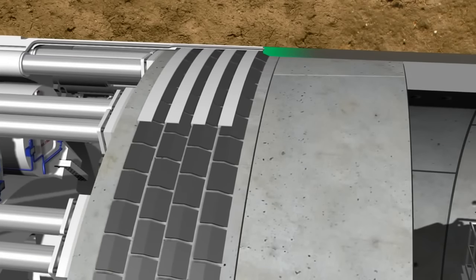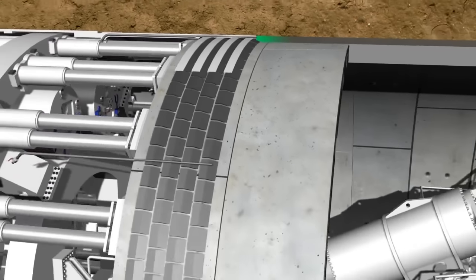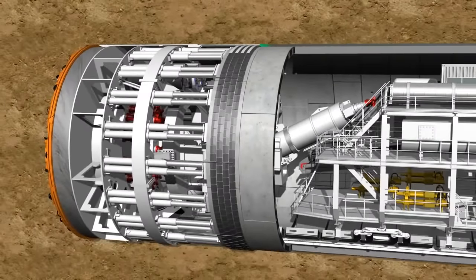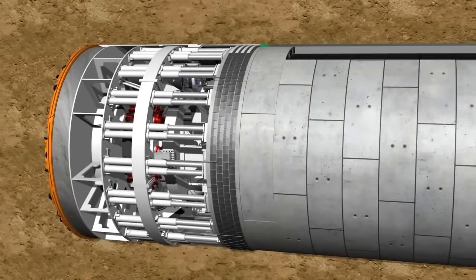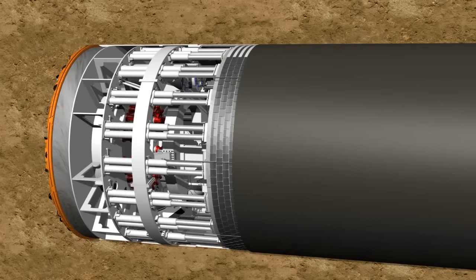The remaining annular gap between the outer side of the lining segments and the soil is continuously filled with grout via injection holes in the tail skin or in the lining segment, in order to provide a bed for the tunnel tube and to stabilize it.